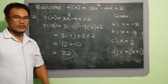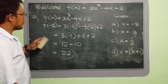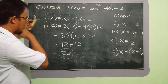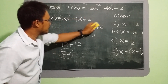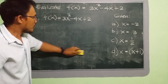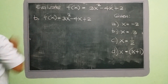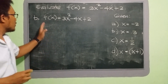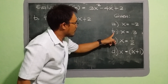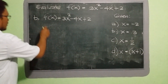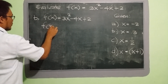Now let us proceed with letter b. The same function, but this time we are going to solve for letter b. The given value of x in our letter b is positive 3, so instead of f of x we are going to put f of 3.